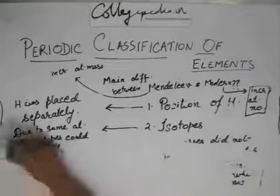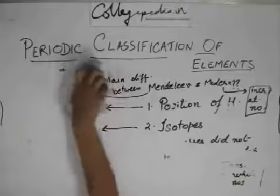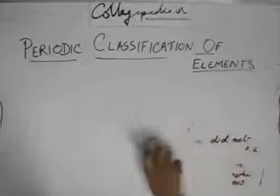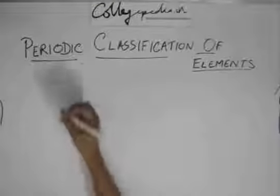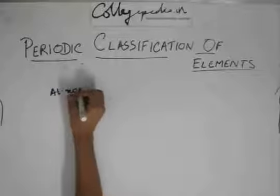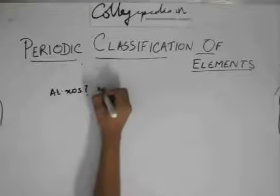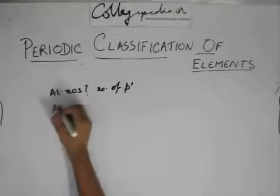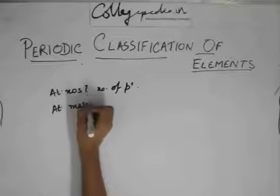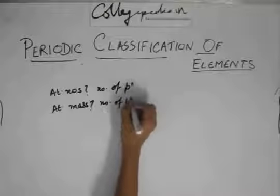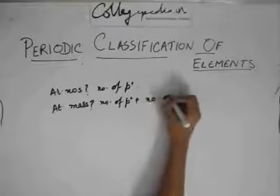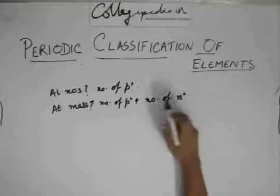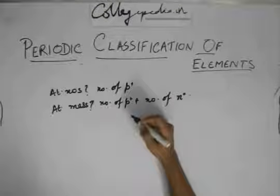So one very important thing is that you might be confused why atomic masses are not whole numbers. What are atomic numbers - they are nothing but number of protons. And what are atomic masses - they are number of protons plus number of neutrons. So if number, if atomic numbers can be integers, whole numbers, then why can't atomic mass be whole number?